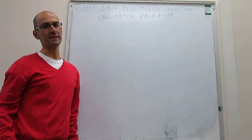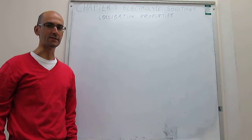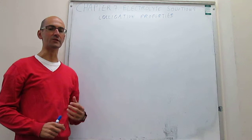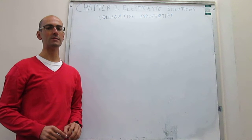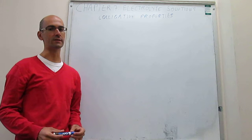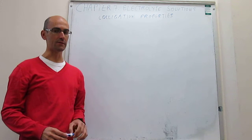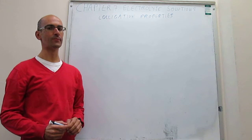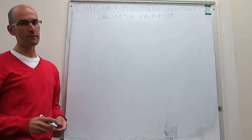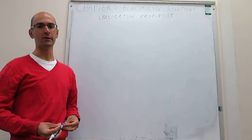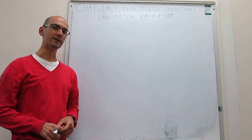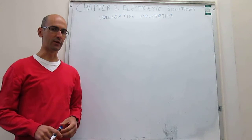In this video, we explain colligative properties of electrolyte solutions. Colligative properties is a concept that we introduced when describing non-electrolyte solutions — those that depend not on the chemical nature of the solute, but only on the amount of solute in solution. There were three types of colligative properties we studied: the first was freezing point depression of the solvent, the second was boiling point elevation, and the third was osmotic pressure.